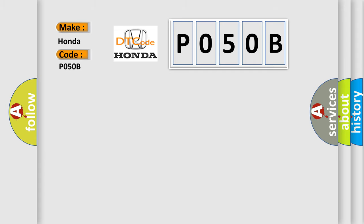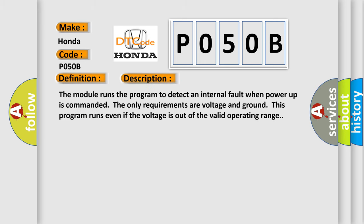The basic definition is Electronic Control Unit Performance EPROM Integrity. And now this is a short description of this DTC code. The module runs the program to detect an internal fault when power-up is commanded. The only requirements are voltage and ground. This program runs even if the voltage is out of the valid operating range.